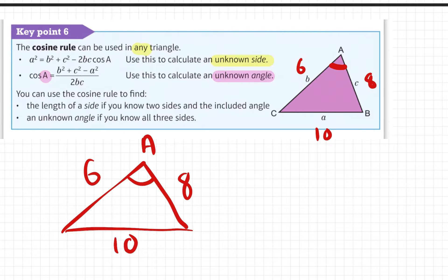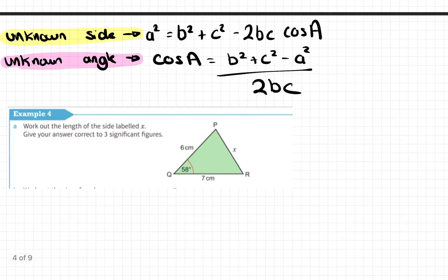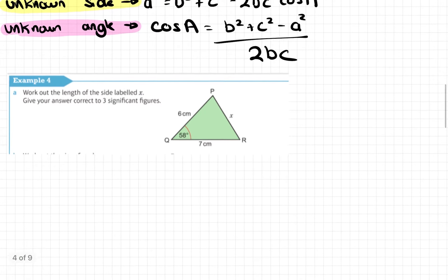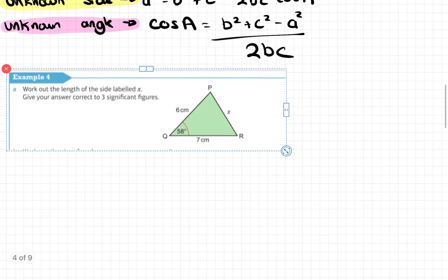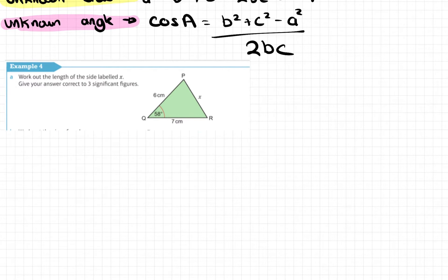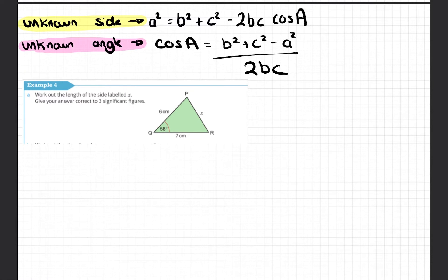I want to show you an example now. If you haven't already, just make little notes of these rules here. I'm going to be using them throughout today. So here we are, I've done in yellow for you the unknown side rule and the unknown angle rule. Here we have a triangle.